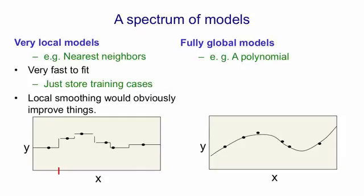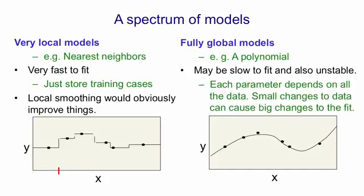At the other extreme, we have fully global models, like fitting one polynomial to all the data. They're much harder to fit to data, and they may also be unstable. That is, small changes in the data may cause big changes in the model you fit. That's because each parameter depends on all the data.